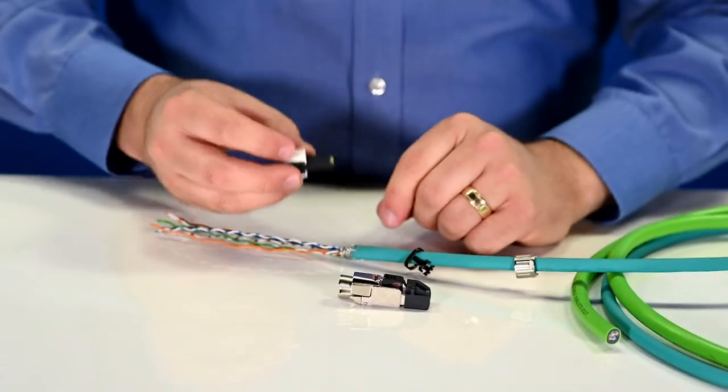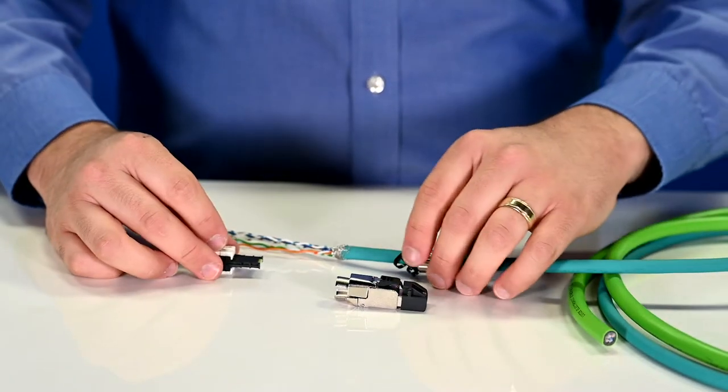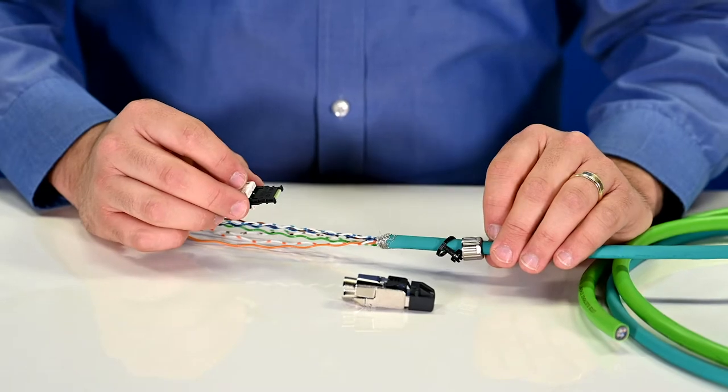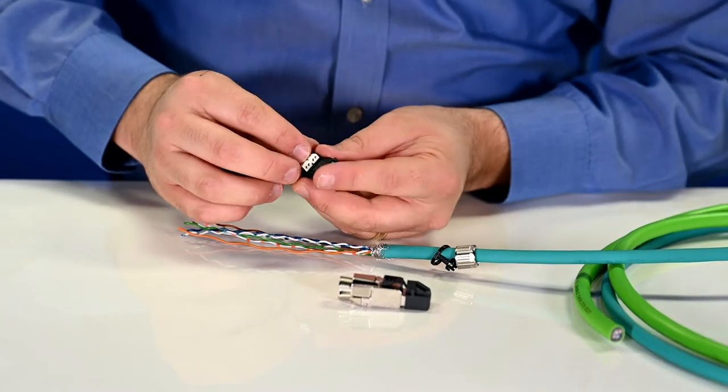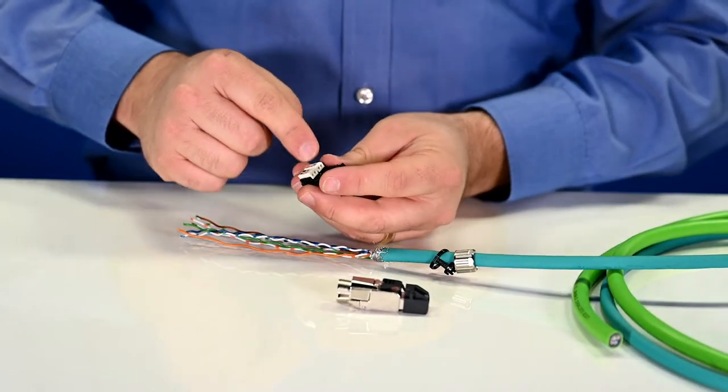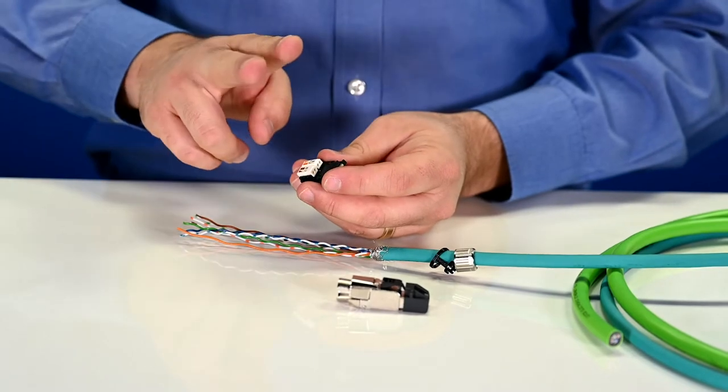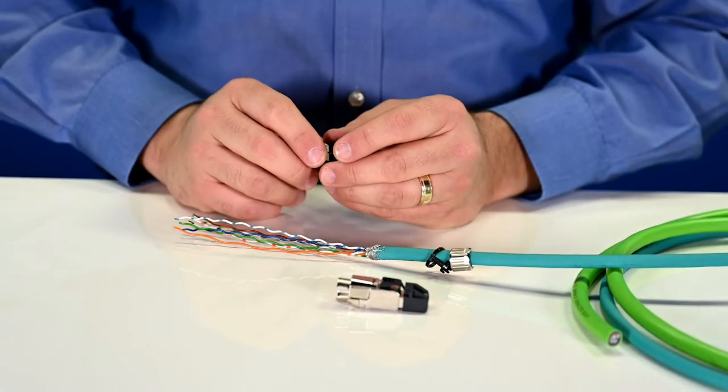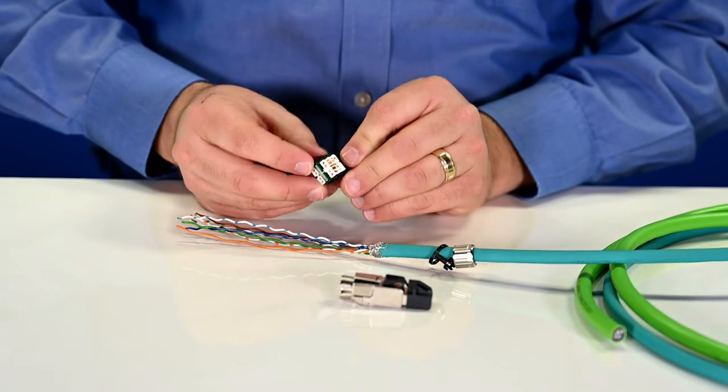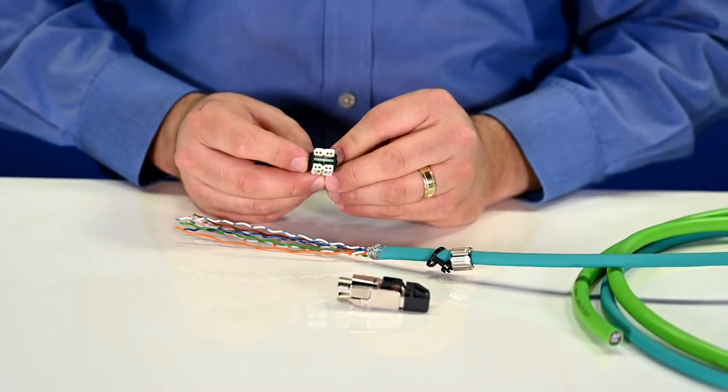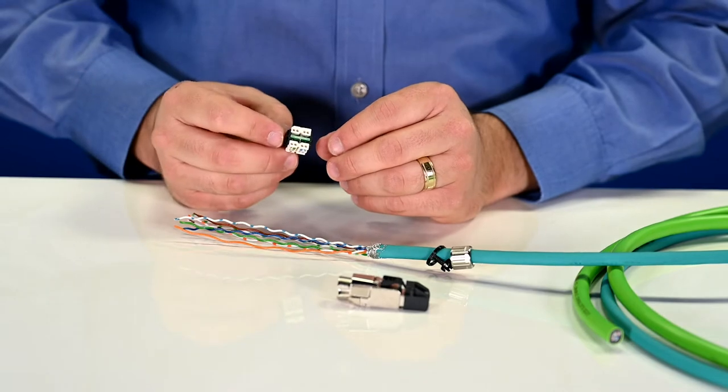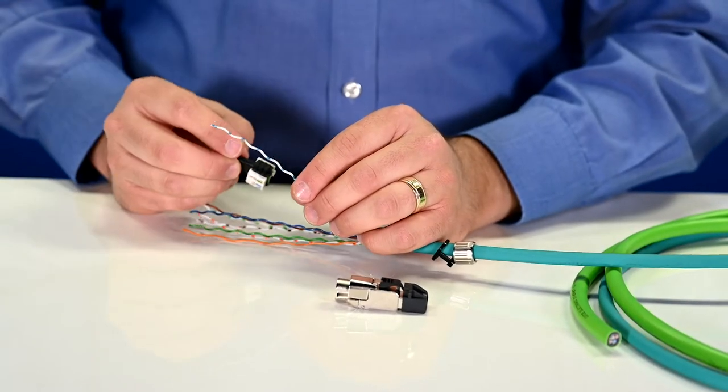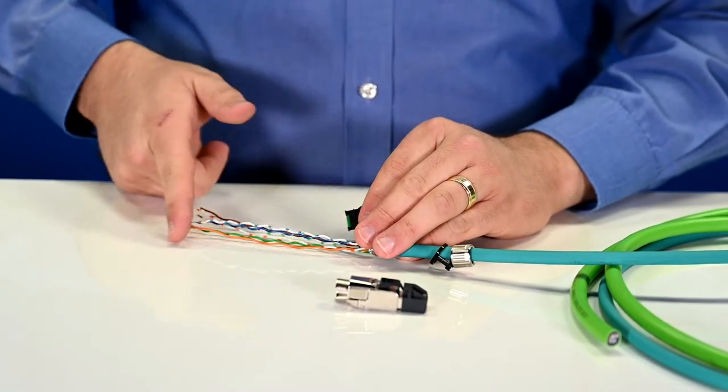Now that we have that in place, we can deal with the conductors. Lutza field-wireable connectors use something called insulation displacement contacts. Inside of this housing, there are actually very small blades that will cut through the conductor insulation and make a nice electrical contact with the copper. That saves you the trouble of having to use any crimping tools to make that termination. It also means that we can pass these conductors all the way through the connector and not worry about how much excess is left.